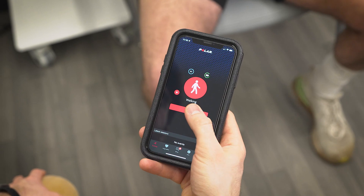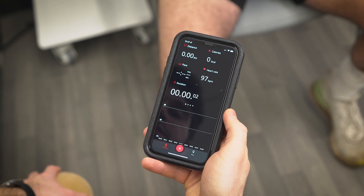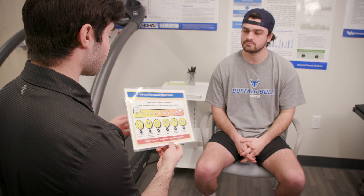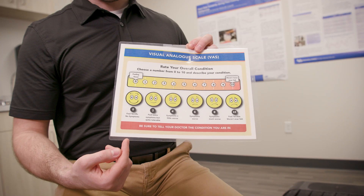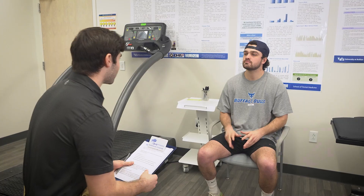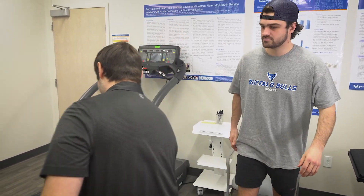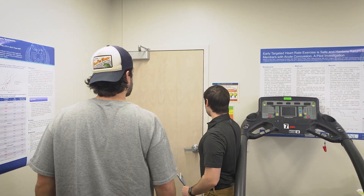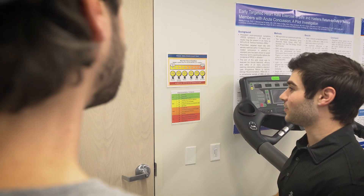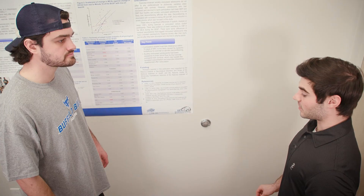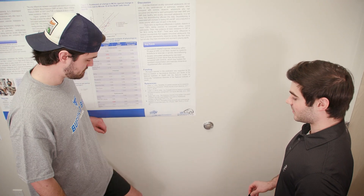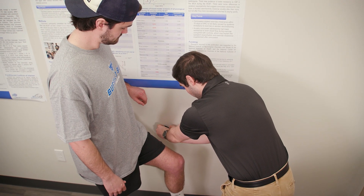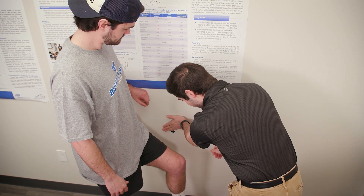Record the patient's heart rate and baseline concussion symptoms after two minutes of seated rest. Symptoms should be recorded on the 0 to 10 VAS scale. Place the RPE and VAS scales within comfortable viewing distance of the patient so that the scales can be seen during the test. Adhere tape to a wall to serve as a guide for proper hip flexion during the test. Tape should be positioned at the midpoint of the participant's thigh at 45 degrees of hip flexion.